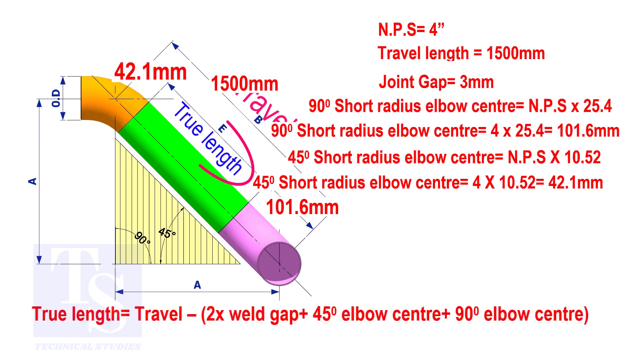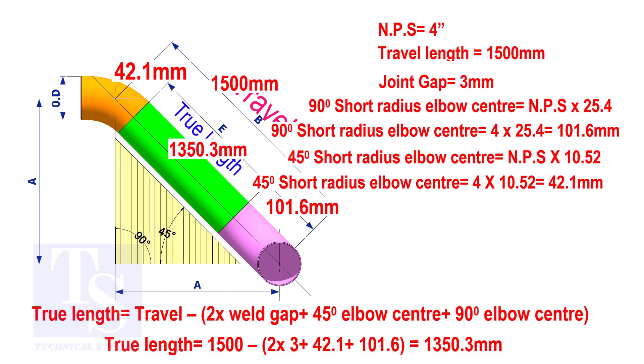To calculate the true length of the pipe, subtract two weld gaps plus both elbow centers from the travel length. The true length of the pipe is 1350.3 millimeters.